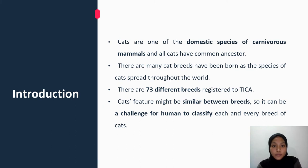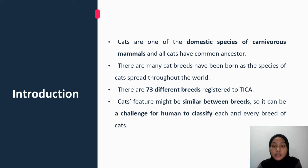Many cat breeds have been born as the species bred, and currently there are 73 breeds of cats registered to the International Cat Association, or TICA. Cats' features might be similar between breeds, so image classification can be a challenging task for human naked eyes because the differences can be subtle. In recent years, CNN has been known for its high accuracy in classifying images, so I will be using this technique to classify breeds of cats.